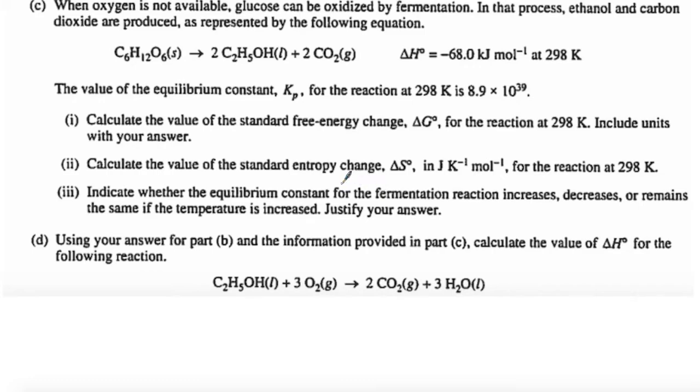When oxygen is not available, glucose can be oxidized by fermentation. The other one, we had to add oxygen. Here, we're not adding oxygen. We're anaerobic. In that process, ethanol and carbon dioxide are produced, as represented by the equation. So here's the delta H of this reaction. And they're saying the value of the Kp for the reaction is this. They want us to find delta G. Now, I'm not going to have you find delta G because we don't have to do that for this AP exam. But I'm going to tell you what equation you need because someday, if you take a higher level chemistry class, you're going to need to know how to do this. Delta G is equal to minus RT ln K. So you would just plug it in and you know your K so you can find your delta G.